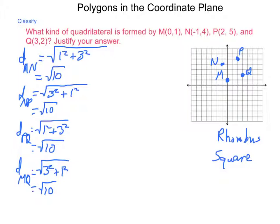So, let's find the slope of MN. Okay, so, our change of Y is up 3. Our change of X is left 1. So, our slope here is a negative 3.